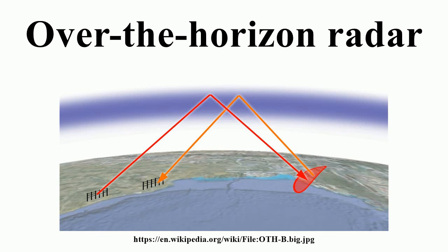France has developed an OTH radar called Nostradamus during the 1990s. In March 1999, the OTH radar Nostradamus was said to have detected two Northrop B-2 Spirit aircraft flying to Kosovo. It entered service for the French army in 2005 and is still in development. It is based on a star-shaped antenna field used for emission and reception, and is able to detect every aircraft at a range of more than 1,000 kilometers in a 360-degree arc.